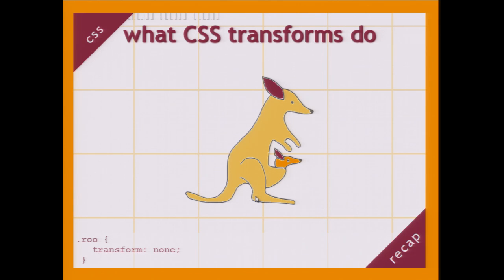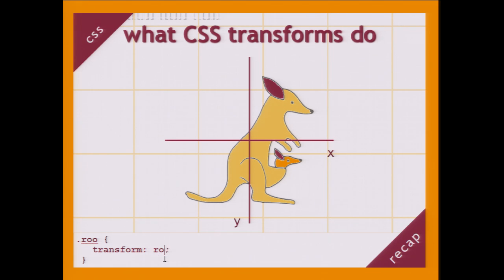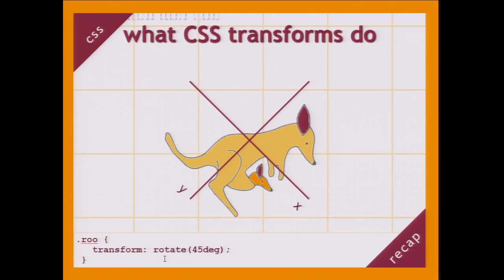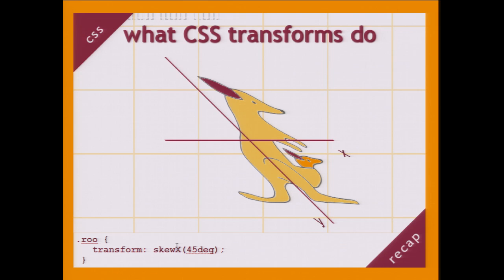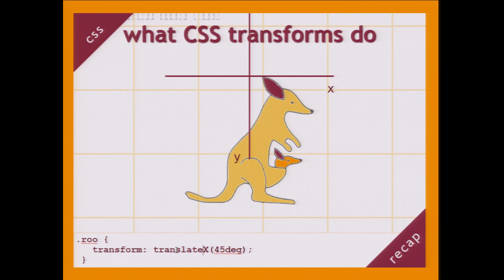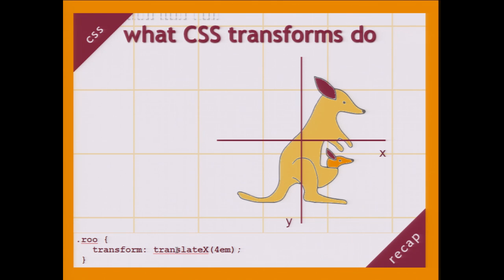So now for a short CSS recap. What transforms do to elements? Well, let's take Roux here — she has a system of coordinates. And if we apply a transform to her, not only does the transform rotate, also the system of coordinates gets rotated. And if we apply something like a skew, then the system of coordinates gets skewed as well. For a translate, the system of coordinates gets translated. And the translate is really useful because we can put it in between two other transforms, and in that way we're going to be able to move the transform origin.